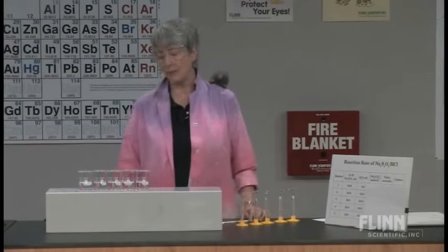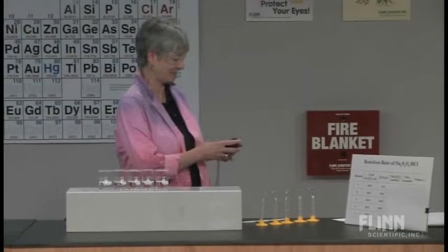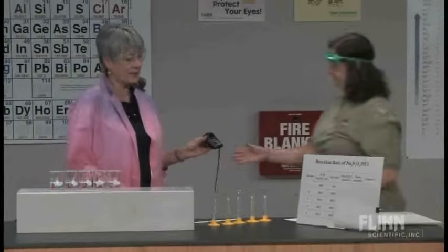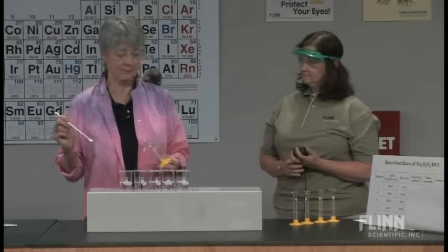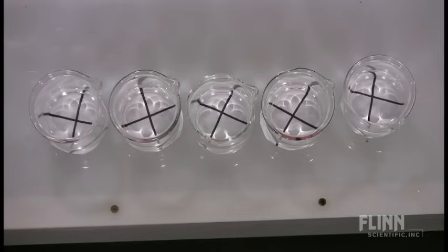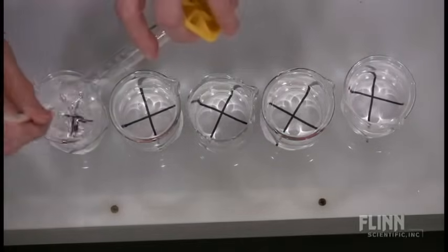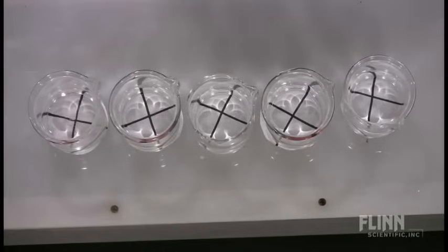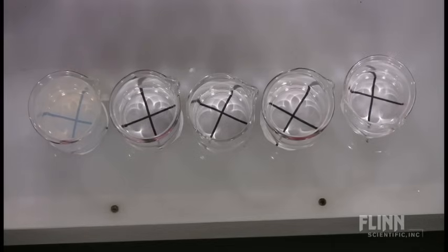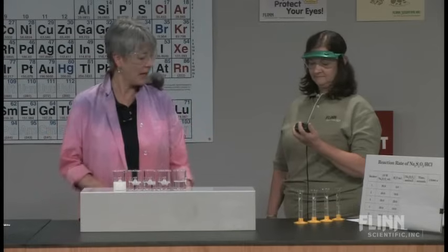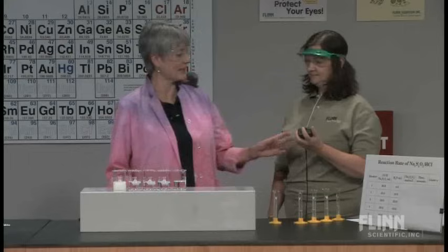Students are going to observe the disappearance of an X as that colloidal sulfur forms, so we need to time this. Can I get a volunteer? Janet, I'm going to tell you when to start and when to stop. I'm going to put the hydrochloric acid in here and then tell you to start and stop. Start. Now I'm going to tell you when that X disappears. If you look from the side, you should start to see the cloudiness. Stop. How many seconds did that take? 18.68 seconds.